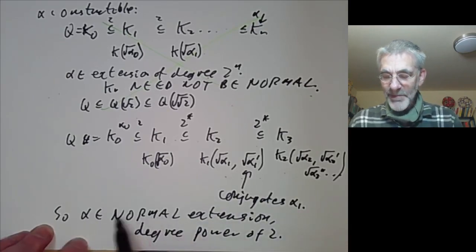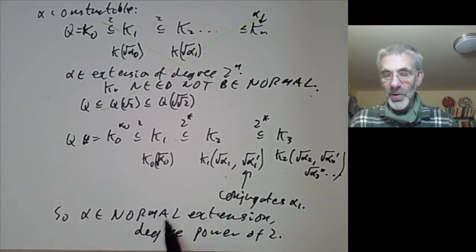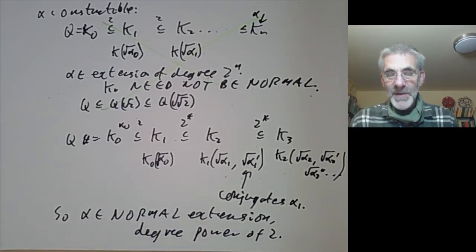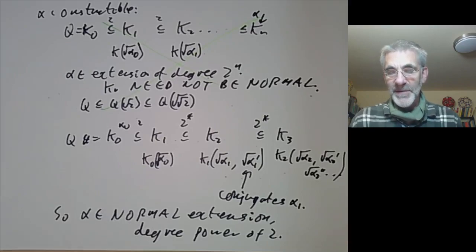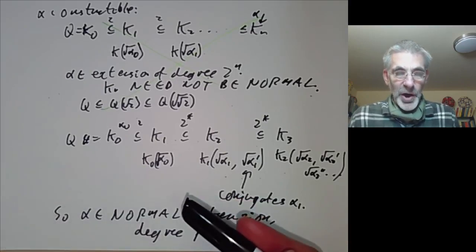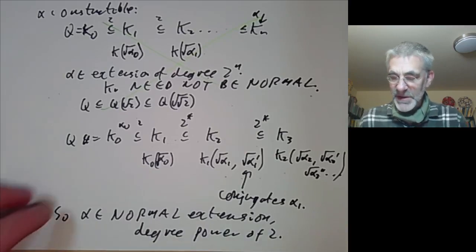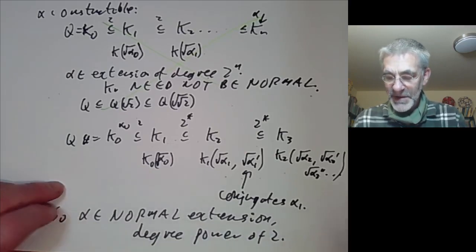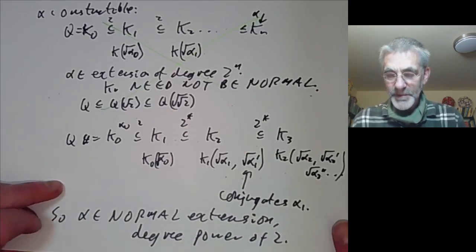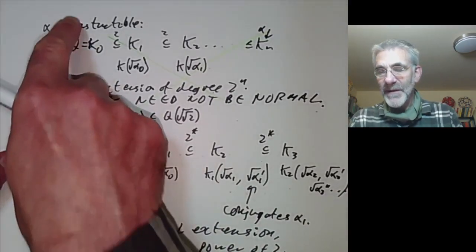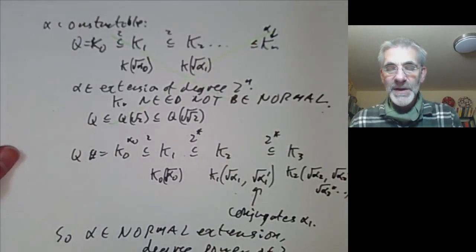It's important that we put 'normal' here, because there are lots of degree 4 extensions whose elements are not constructible — you can't solve an arbitrary fourth-degree polynomial just by using square roots, for example. So that's shown that if alpha is constructible it's in a normal extension. Now let's go back the other way.